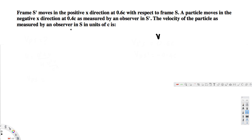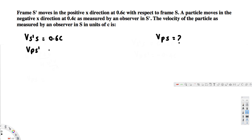We want to find vps — the velocity of particle p as measured in frame S. From the given information: v_s'_s equals 0.6c, since the motion is in the positive x direction. The particle moves in the negative x direction at 0.4c as measured in S prime, so vp_s' equals negative 0.4c.